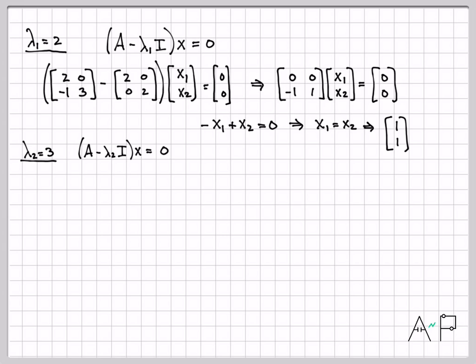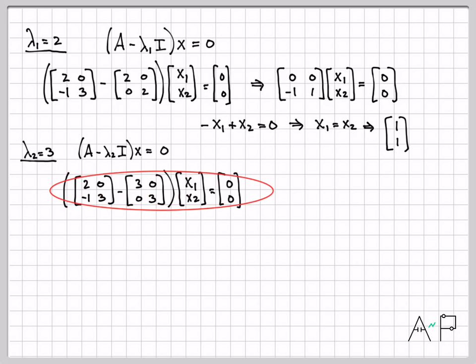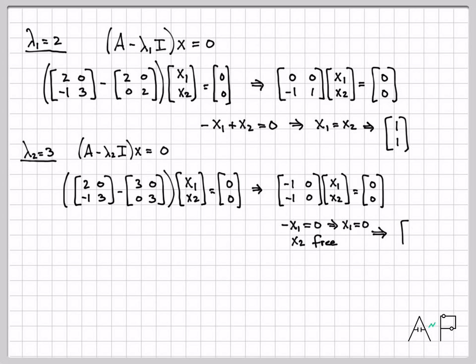Similar computation for lambda 2 equal to 3. I need to solve this system of equations right here. So I have A. I need to subtract off 3 times the identity matrix. And this is the system of equations I need to solve. If I simplify just a little, this is the system of equations I need to solve. And looking at this, equation 1 says that negative x1 equals 0. That means x1 must be 0. And this second column here, all being zeros, means that x2 is a free variable. So x1 has to be 0. And x2 can be anything I want. So for simplicity, I'll just make it 1. So these are my eigenvectors. I have 1 here. And I have this one here, which corresponds to lambda 2 equal 3.